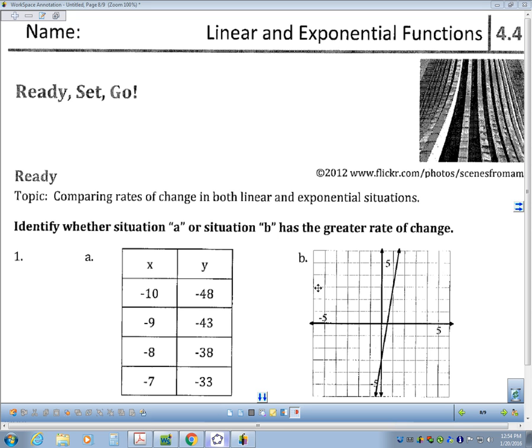I'm also going to graph situation B on GeoGebra to see how it compares to situation A as a graph. The only thing I need to know is for situation B, this point has a coordinate of 0, negative 3, the y-intercept.